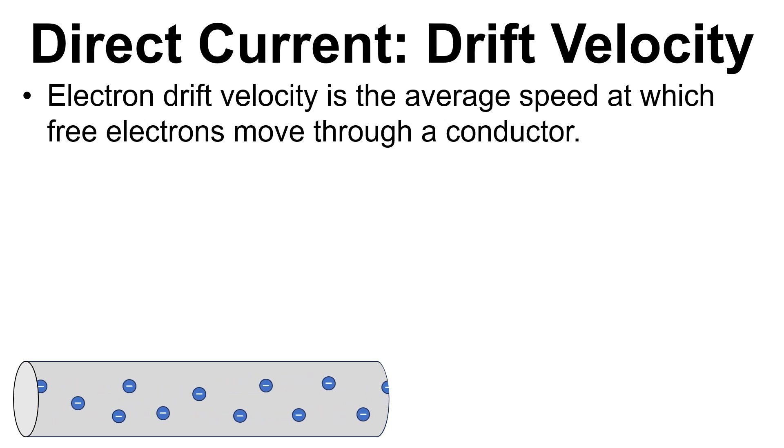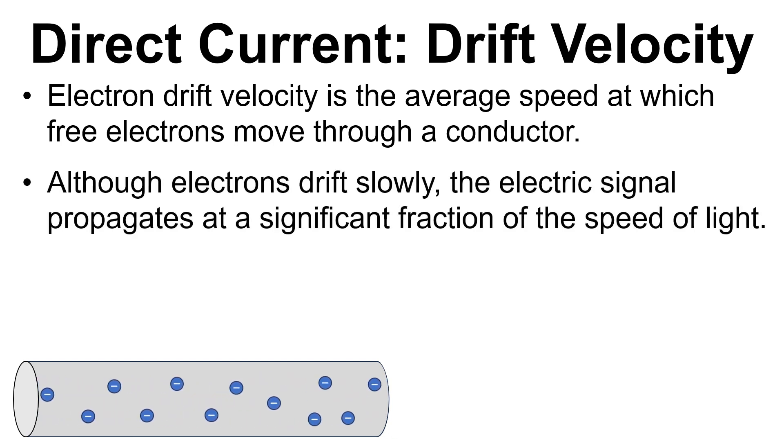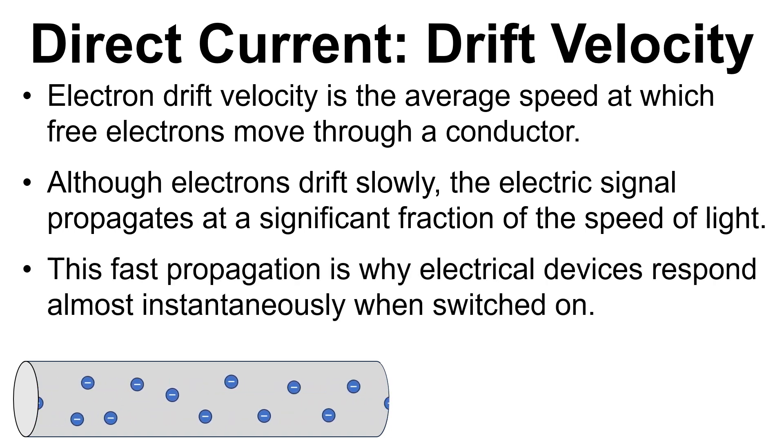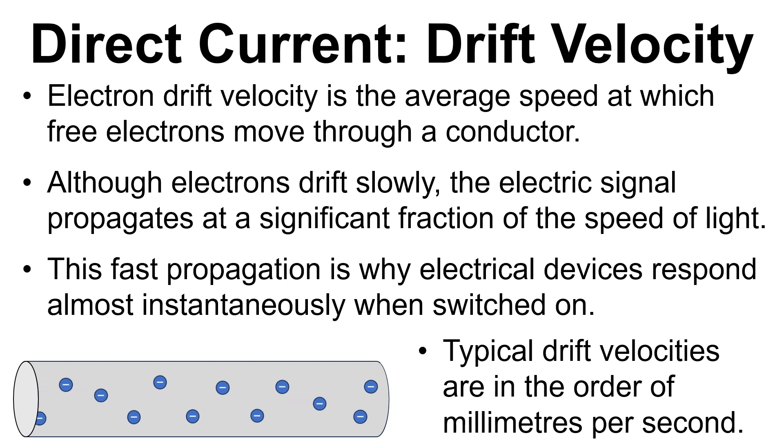Electron drift velocity is the average speed at which free electrons move through a conductor. Although electrons drift slowly, the electrical signal propagates a significant fraction of the speed of light. For example, in copper it's about two-thirds the speed of light that the signal will travel along the wire. This fast propagation is why electrical devices respond almost instantaneously when they're switched on. And that's in spite of the typical drift velocities being only a few millimeters per second or around that sort of value.